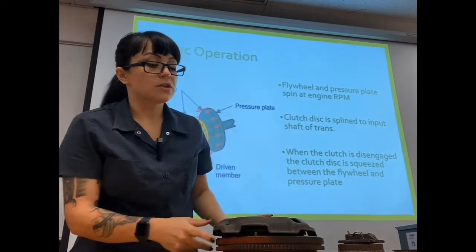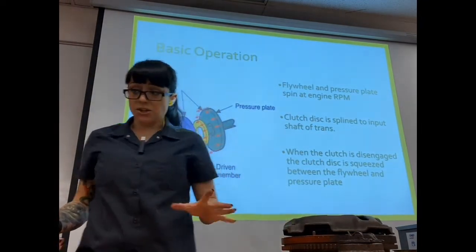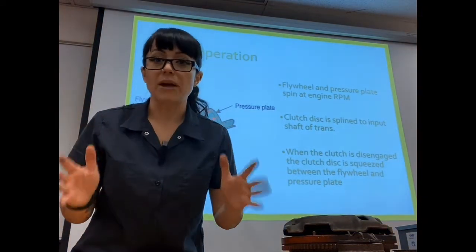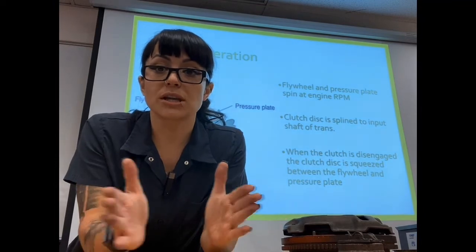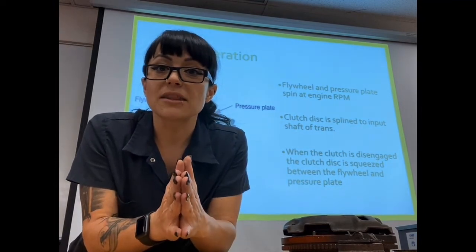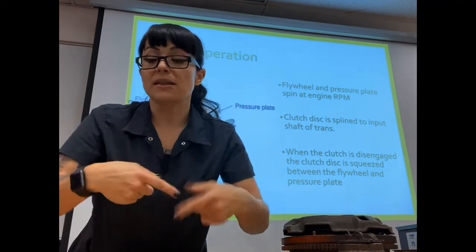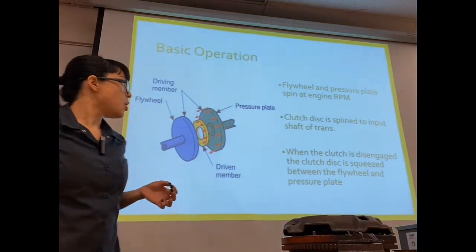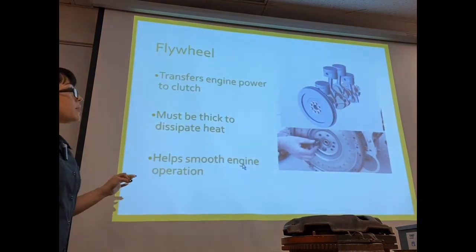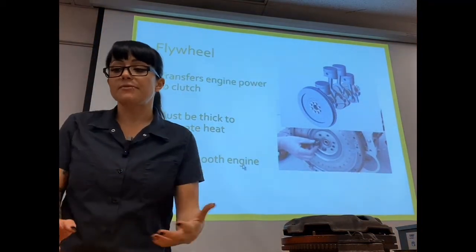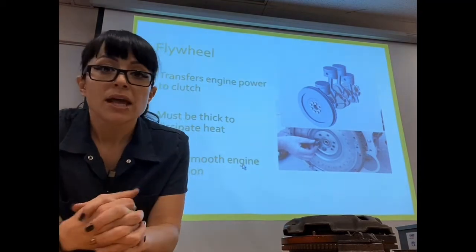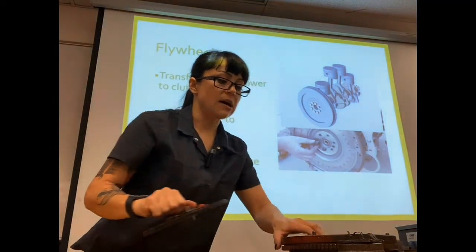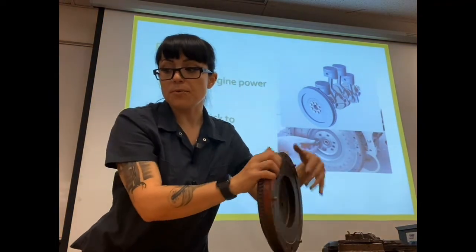The flywheel and pressure plate are spinning at engine RPM. The clutch disc is the input to our transmission. When we're ready to engage our engine with the transmission, we're going to sandwich that clutch together and everything's going to spin at the same RPM. The flywheel itself transfers engine power to the clutch and needs to have a couple of key properties.